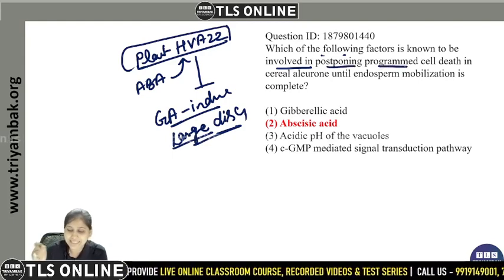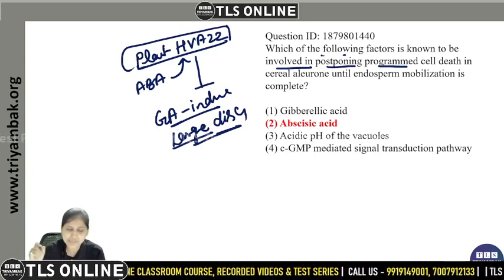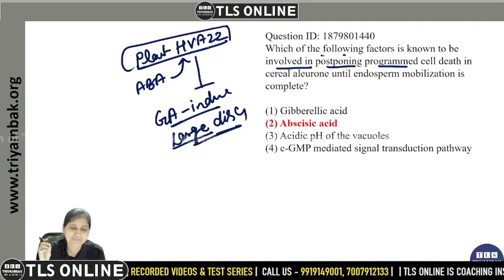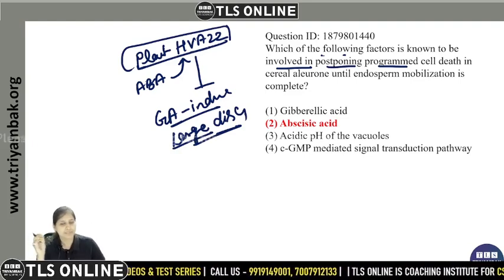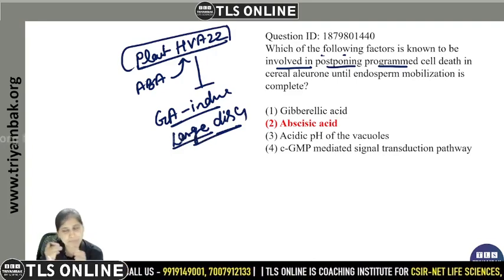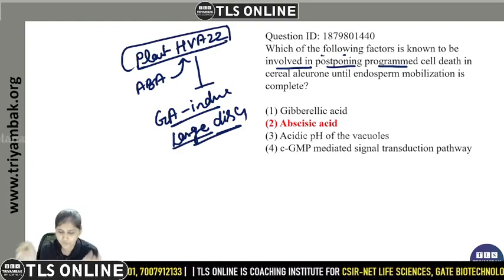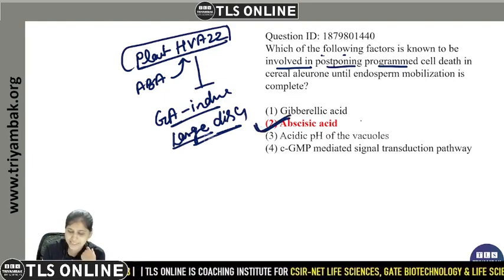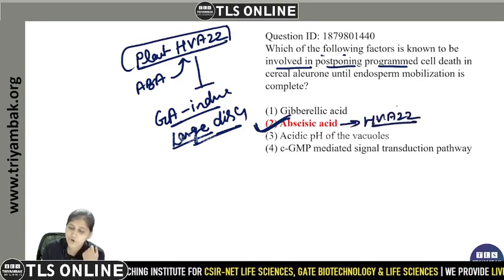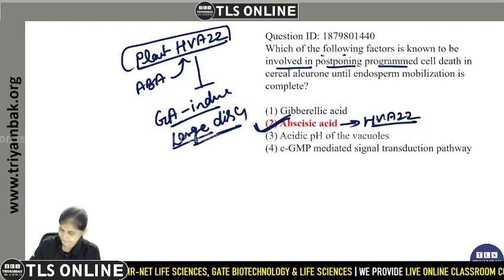In aleurone cells, to postpone programmed cell death, ABA induces the accumulation of HVA22 proteins to inhibit vacuolar trafficking involved in nutrient mobilization, and to delay coalescence of protein storage vacuoles as part of its role in regulating seed germination and seedling growth. That's why ABA (abscisic acid) and HVA22 expression postpone programmed cell death in cereal aleurone cells.